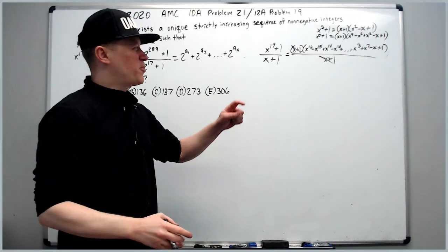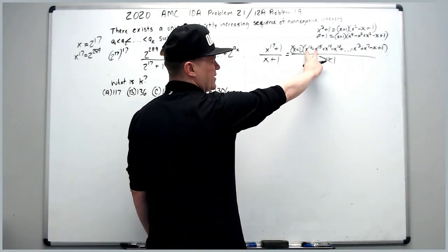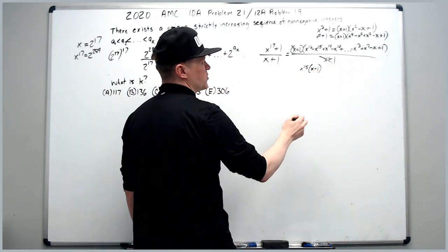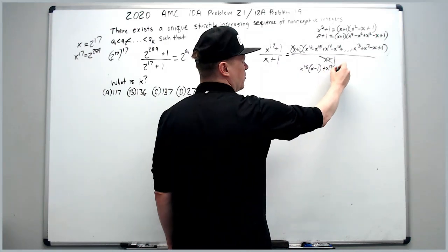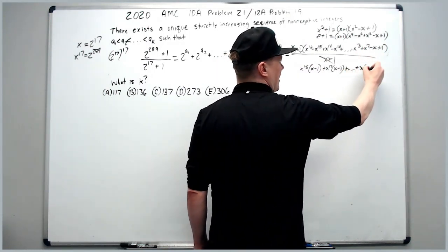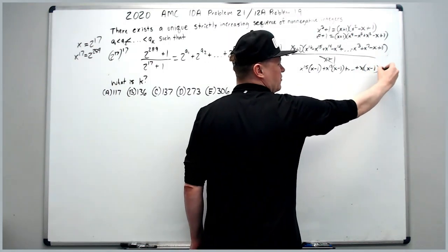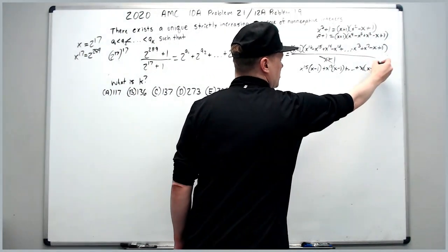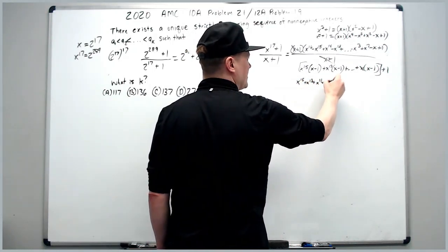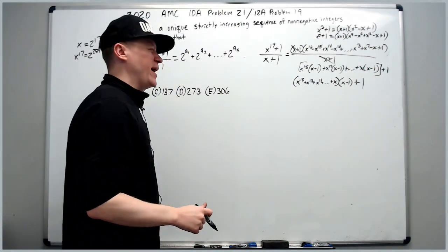We're between first and second base — still a long way to go. Next, take the first two terms and factor out x¹⁵ to get x¹⁵(x − 1), then factor out x¹³ from the next two terms for x¹³(x − 1), all the way down to x(x − 1), plus the final +1. Group everything: (x¹⁵ + x¹³ + x¹¹ + ... + x)(x − 1) + 1.